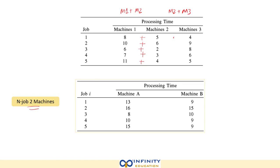So we have successfully converted. 8 plus 5 will be 13, 10 plus 6 equals 16. Same goes for all. Machine B: 5 plus 4 is 9, 3 plus 6 is 9. Same goes for all. So we have converted this 3 machine problem into a 2 machine problem.